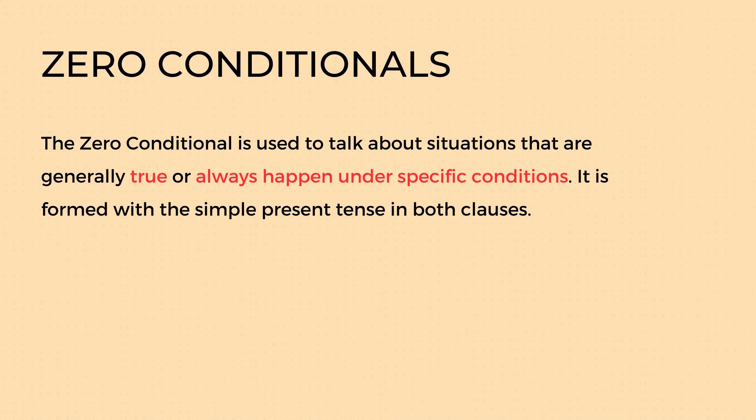The zero conditional is used when we want to talk about situations that are generally true or always happen under certain conditions. To form the zero conditional, we use the simple present tense in both the if clause and the main clause.